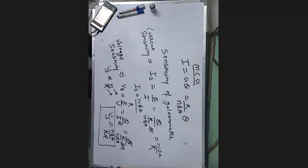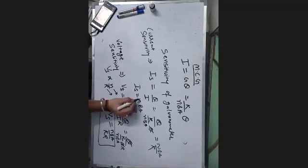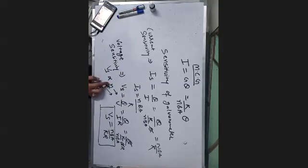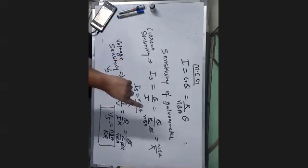For example, if you triple the number of turns (3N), the current sensitivity becomes 3NBA by k. But in the voltage sensitivity formula, multiplying N by 3 also multiplies the resistance by 3, so you get 3N / (k × 3R). The 3s cancel out.